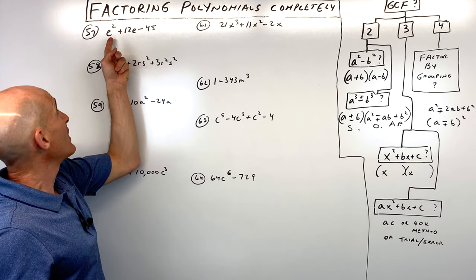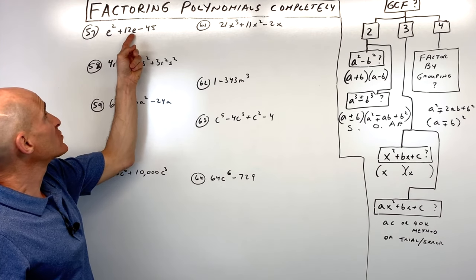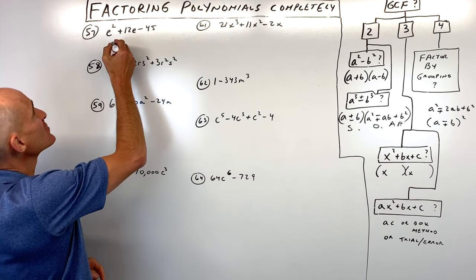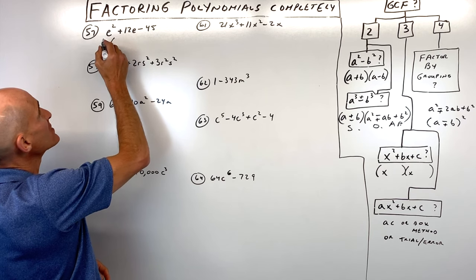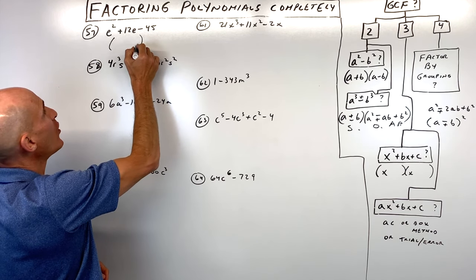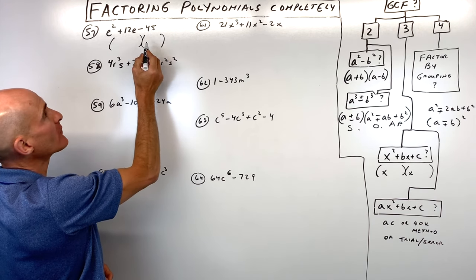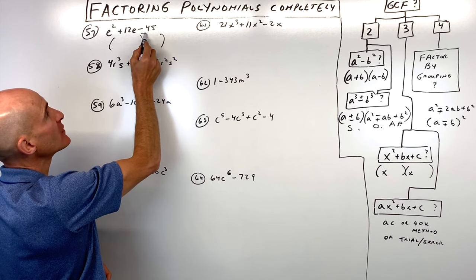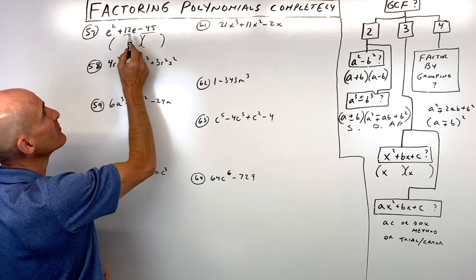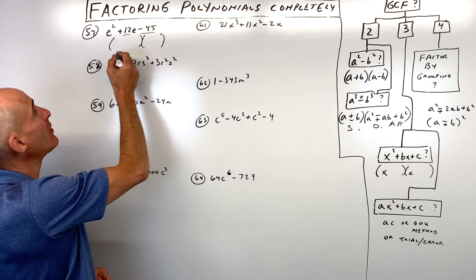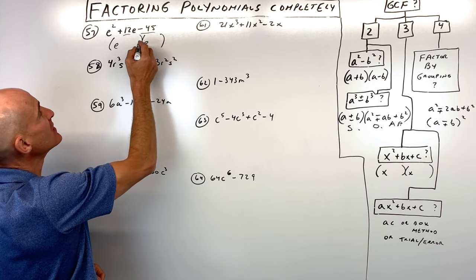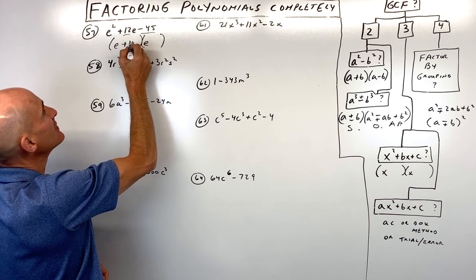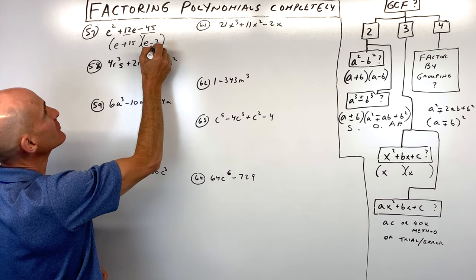Number fifty-seven, e squared plus 12e minus 45. It's a straightforward trinomial with leading coefficient 1. What two numbers multiply to negative 45 but add to 12? That's 15 and negative 3.